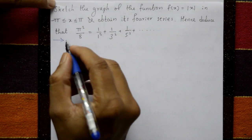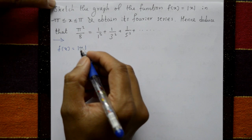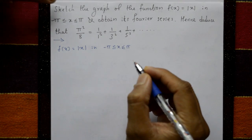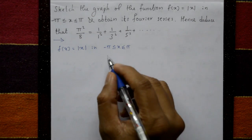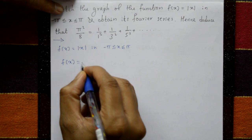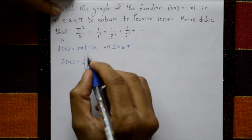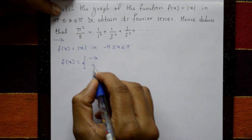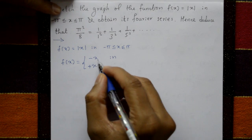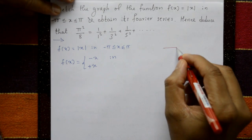Solution: f(x) = |x| in the interval -π ≤ x ≤ π. Modulus means plus or minus, so this function is f(x) = -x or +x depending on the interval. See the diagram.